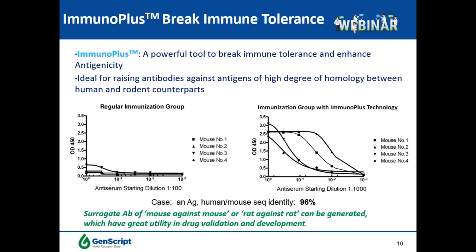In cases where the human target has high homology with the rodent counterpart, we have the proprietary ImmunoPlast technology to break immune tolerance. Before applying this technology, all four mice did not generate sufficient antibody response against the high-homology target. However, after applying the ImmunoPlast technology, all mice generated significant antiserum titers. Another application of this technology is to develop surrogate antibodies such as mouse anti-mouse antibodies for target validation.